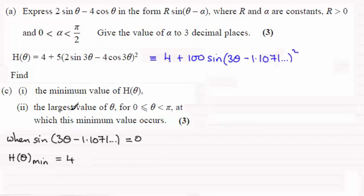Now we've got to go on and find the largest value of θ for which this minimum value occurs in this interval here. So it's basically trying to solve this equation. So when is the sine of 3θ - 1.1071... radians? And that's going to be equal to zero when we do the sine of zero or the sine of π radians or 2π radians, 3π radians and so on.